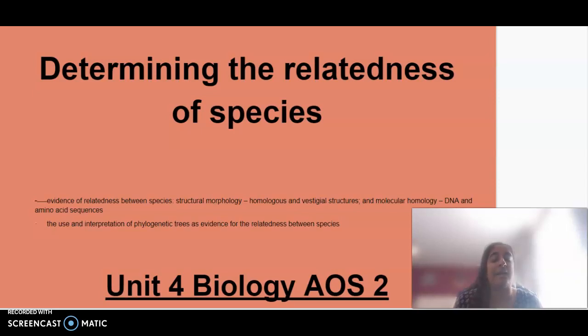This covers any evidence that can show how species are related to each other, including structural morphology and molecular homology. We'll also look at phylogenetic trees and how they represent the relatedness between species.